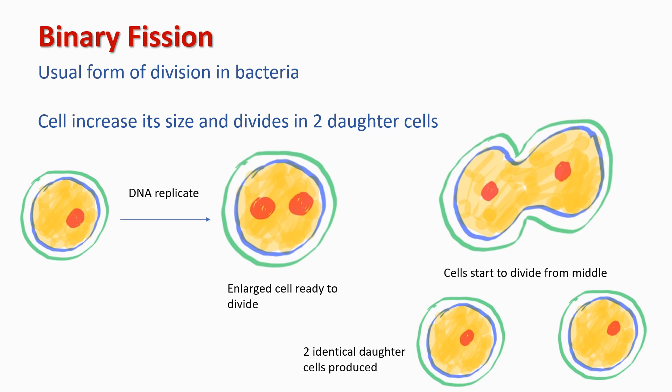Some proteins come together at the site of division. Cytoplasm divides in two parts without disturbing DNA. The cell starts to divide from the middle and that's how one cell gives rise to two daughter cells. Because both daughter cells are identical, cell division is also called replication.